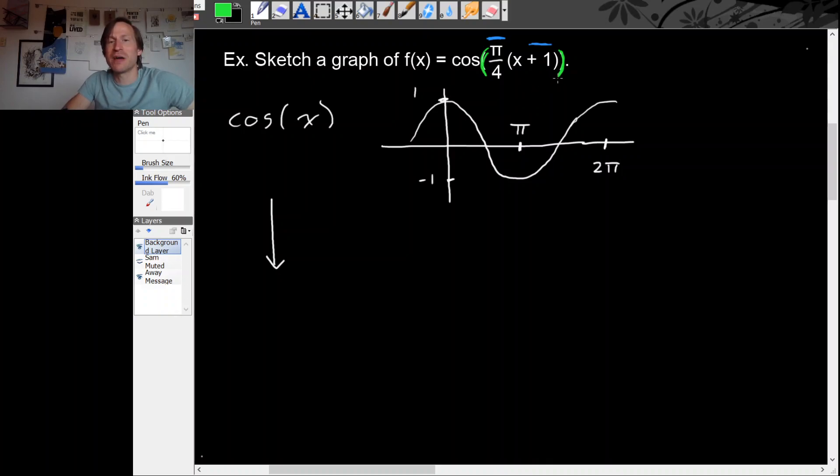So when we work our way inwards from these parentheses, the first operation that we hit is actually the one that's furthest outside on the inside part and that's this multiplication by pi over 4. So we should deal with this pi over 4 first.